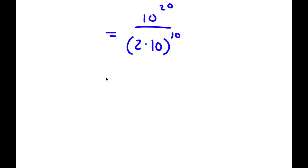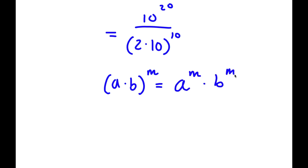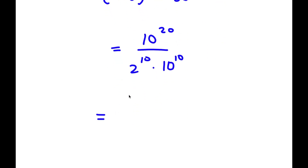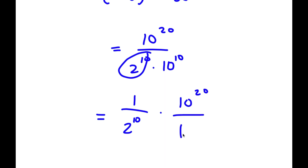Now, if I have something in the form a times b to the power of m, this is equal to a to the power of m times b to the power of m. So 2 times 10 to the power of 10 equals 2 to the power of 10 times 10 to the power of 10. From here, I can take out 2 to the power of 10 from the denominator, and rewrite this as 1 over 2 to the power of 10 times 10 to the power of 20 over 10 to the power of 10.